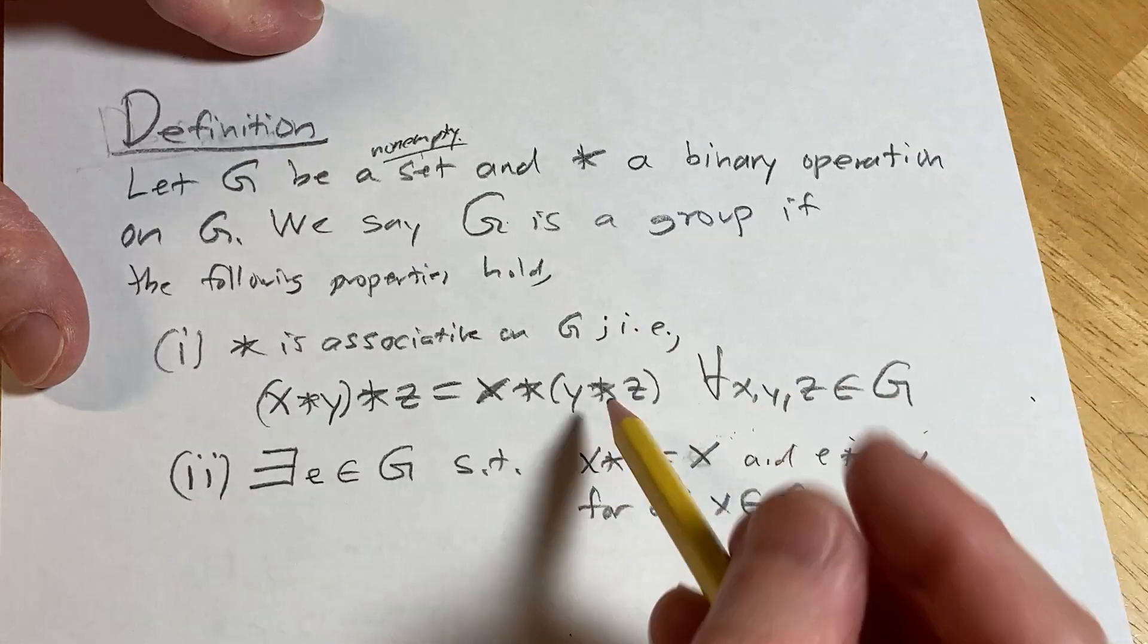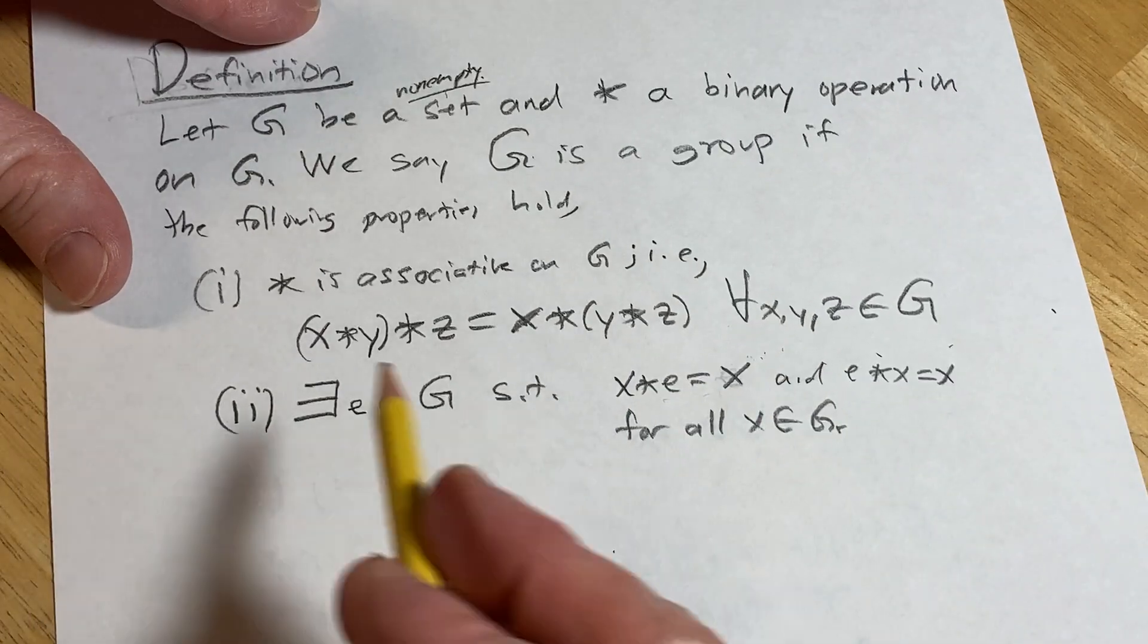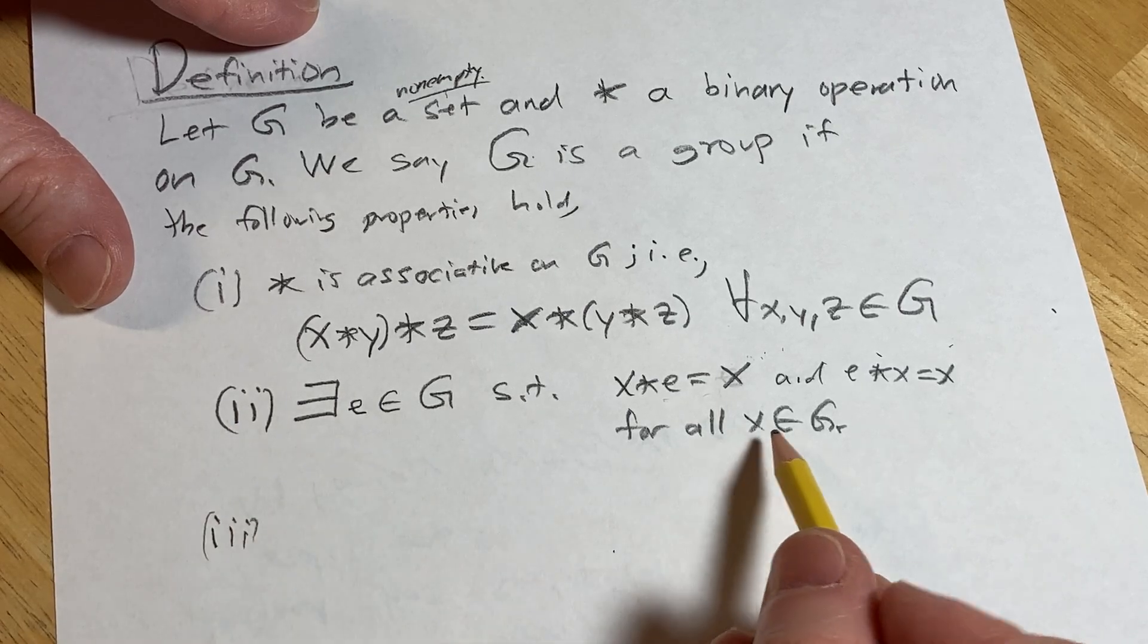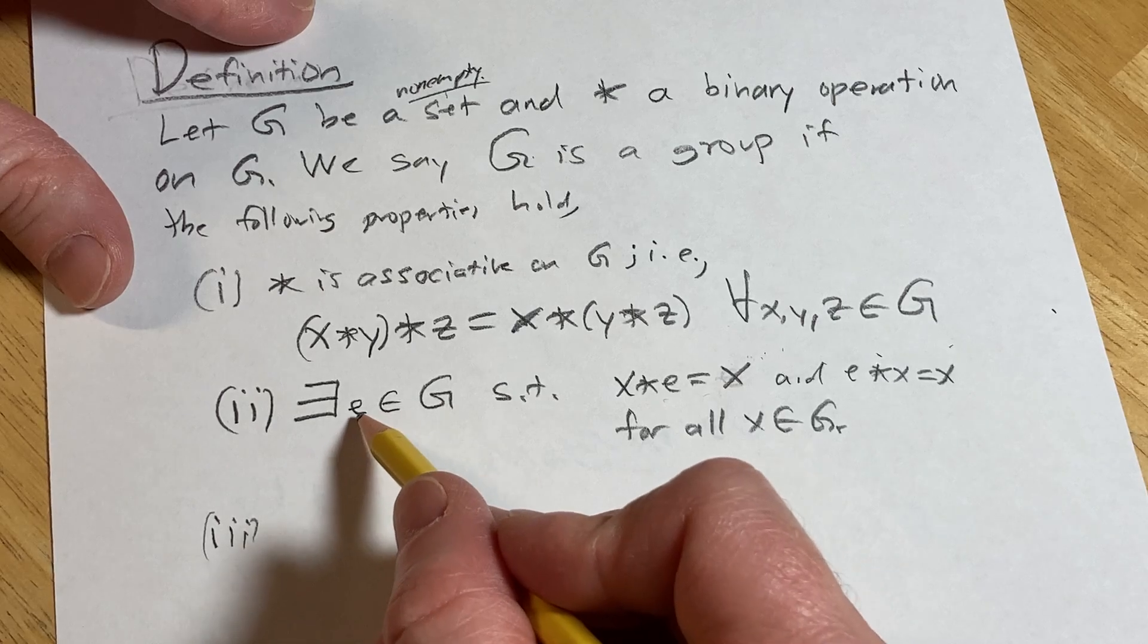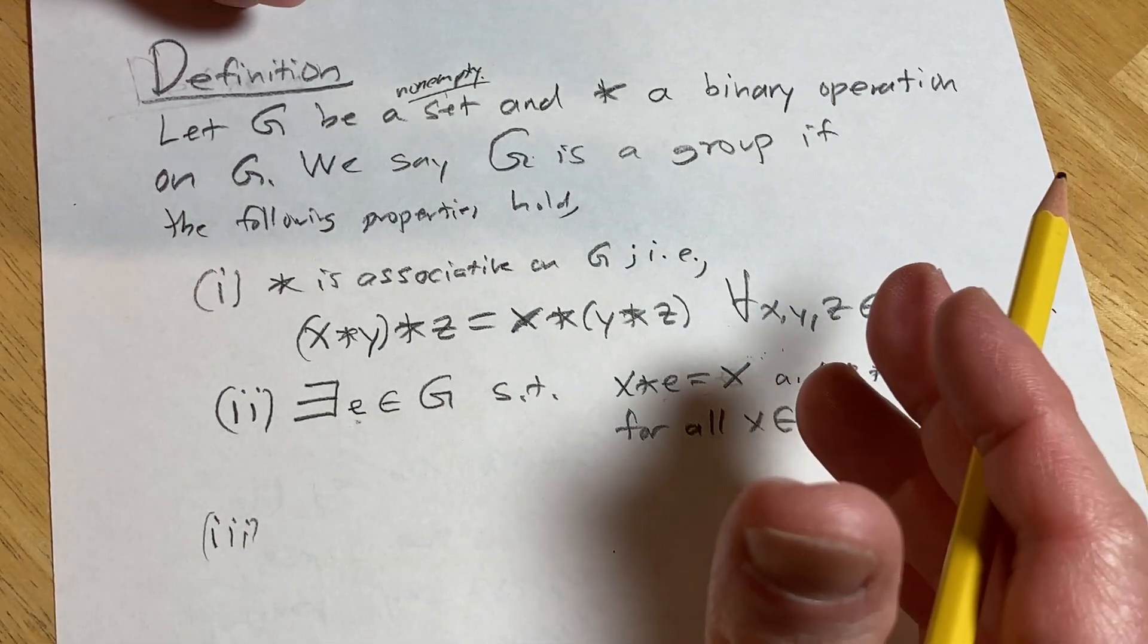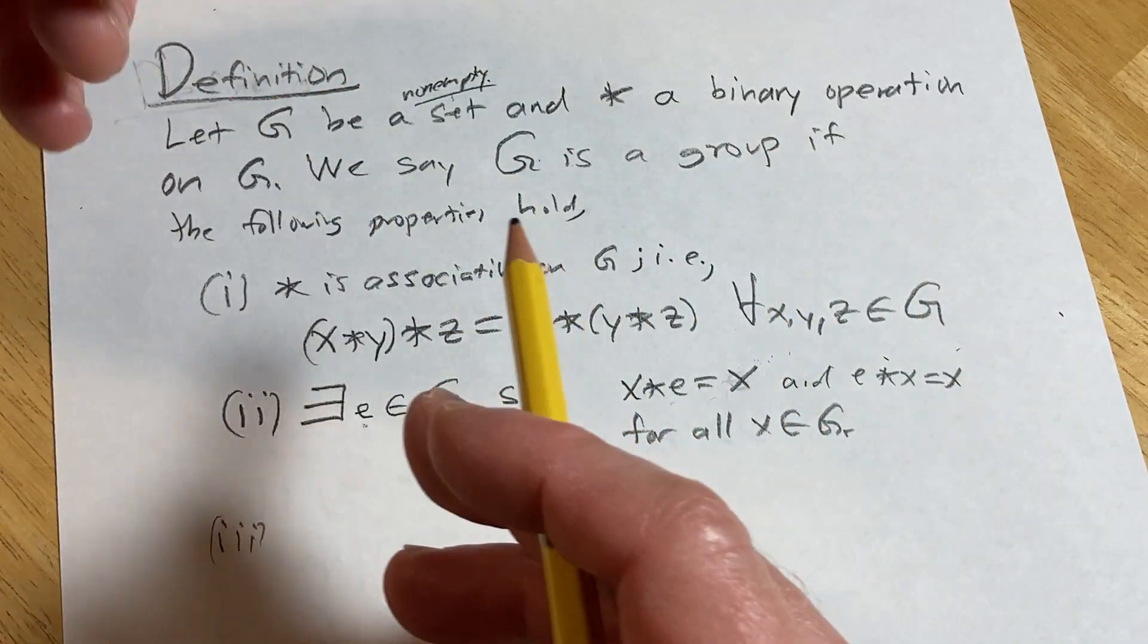A lot of books will write it as one equation, but I like to emphasize it is two. So this is the existence of the identity element here. This is going to be our identity. You can show this is unique. It's a really easy proof, but you have to think about it. It's like a one-line proof, but you have to really think.